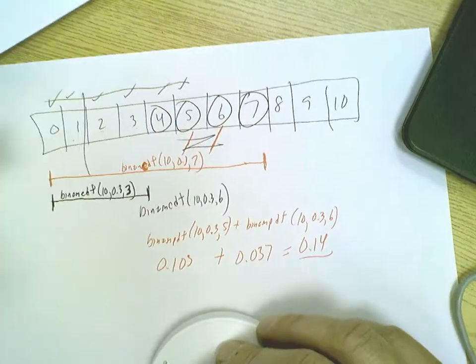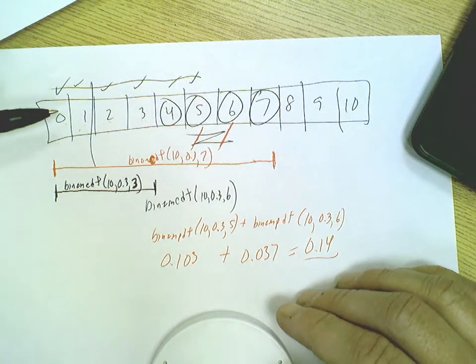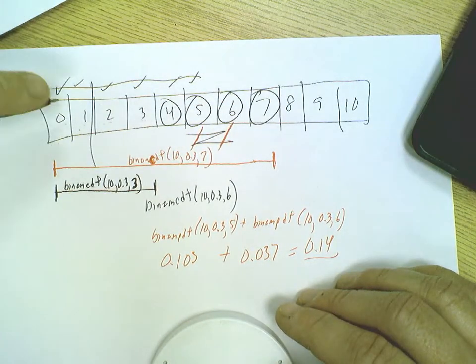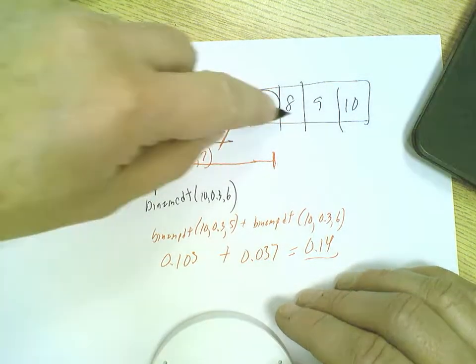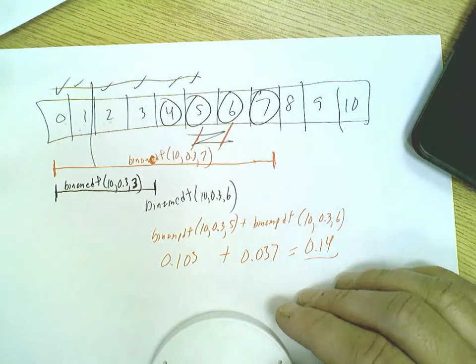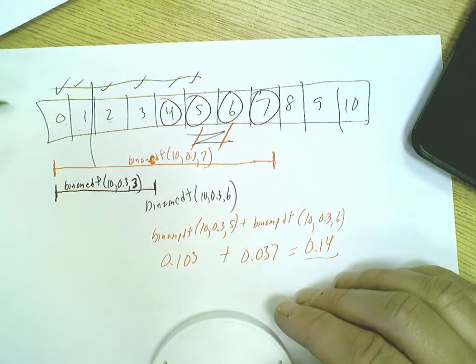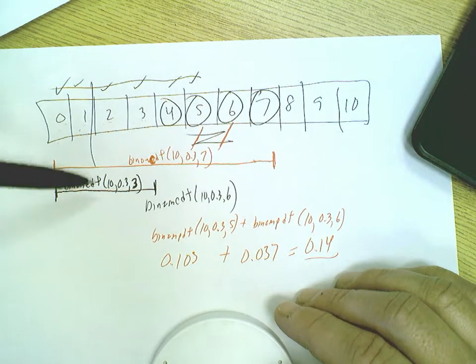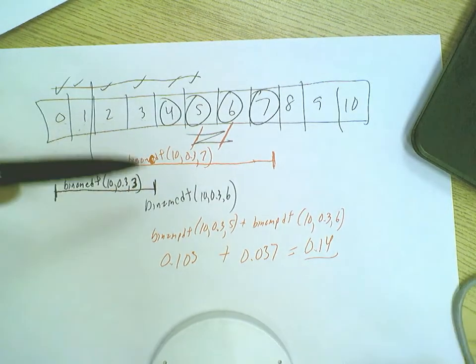Again visually, take a look at what we did. Binomial CDF all the way through seven covers all these values, 0 through 7. Strip away what we don't want. We don't want 0, 1, 2, 3. Well that could be represented as binomial CDF 10, 0.3, and 3.